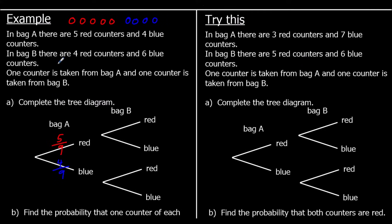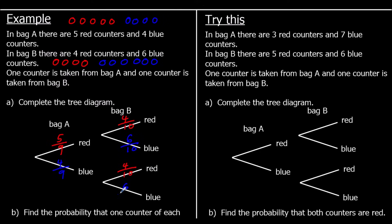In bag B there are four red counters and six blue counters. So what's the probability of getting a red counter? Four out of ten. Four out of ten red, and it's going to be four out of ten regardless of what we got in bag A — that's not going to make a difference. So both of these are going to be the same. The probability of getting a blue from bag B is six out of ten, and again that's the same regardless of what we picked out of bag A. What we picked out of bag A does not affect what we pick out of bag B. So that is our tree diagram completed.